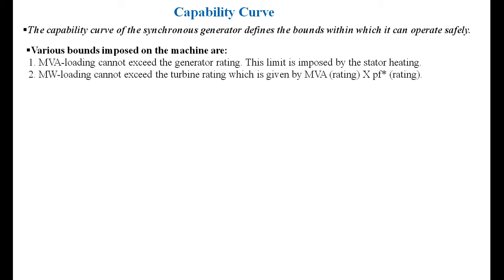The second limitation is that MVA loading cannot exceed the turbine rating, which is given by the MVA rating multiplied by the power factor. That is, the megawatt output of a generator, given by MVA times power factor, should not exceed the turbine rating which is driving the generator, so that there should not be overloading. The turbine rating is given by the MVA output of the alternator multiplied by the power factor.